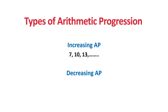For the Decreasing AP, the example is 10, 8, 6, 4 — the terms go in descending order. 10 minus 2 is 8, 8 minus 2 is 6, 6 minus 2 is 4. In this case, the common difference is minus 2. So, if the common difference is positive, it is an Increasing Arithmetic Progression, and if the common difference is negative, it is a Decreasing Arithmetic Progression.